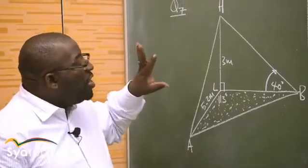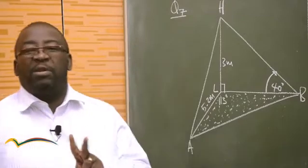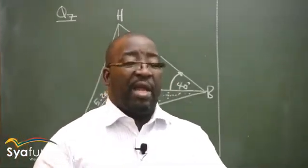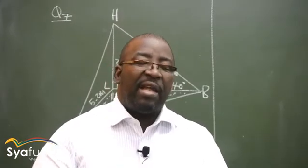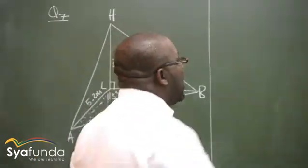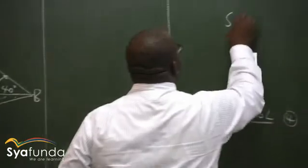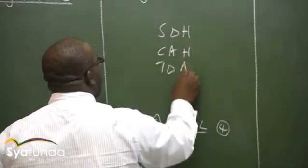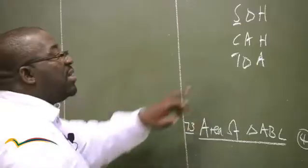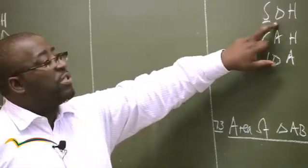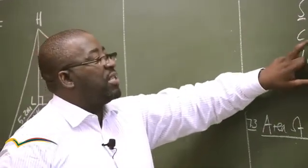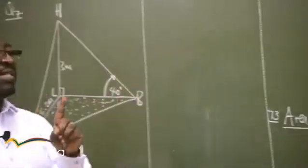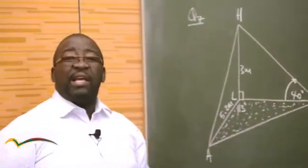When you look at it, there are two things that are important. Number one, look at those triangles — look for a right-angled triangle. Whenever you see a right-angled triangle, that's where we use SOH-CAH-TOA, where the definitions are: sine is opposite over hypotenuse, cos is adjacent over hypotenuse, tan is opposite over adjacent. We only use that if and only if the triangle is a right angle.